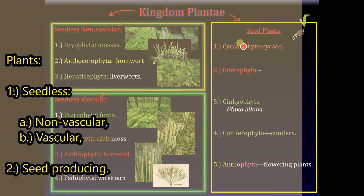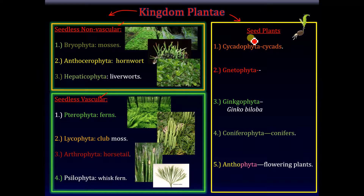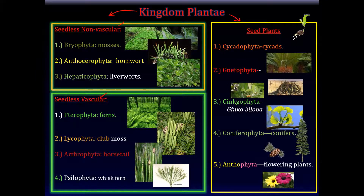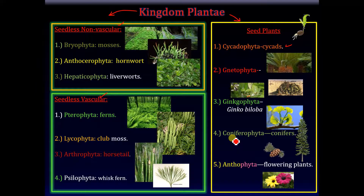Today, inshallah, we shall talk about the other major category of plants — the seed plants. Among these, we shall talk about five important categories of plants or phyla. These include the cycads or Cycadophyta, the Gnetophyta, the Ginkgophyta, and the Coniferophyta — the conifers — and the Anthophyta, the flowering plants.